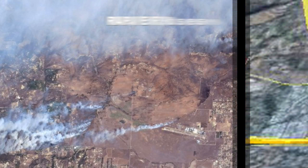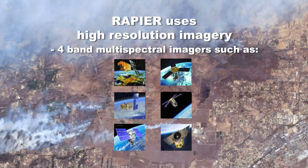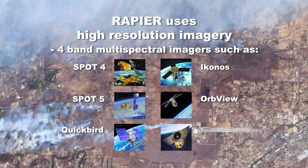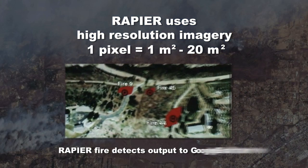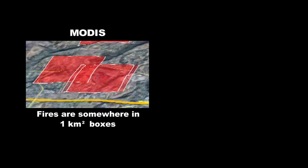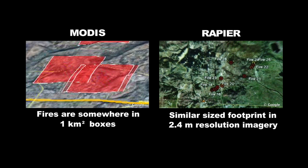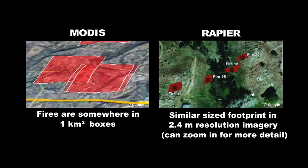The imagery that Rapier uses is high-resolution commercial satellite imagery. The types of imagery that Rapier can process are Spot 4 and 5, QuickBird and Ikonos, OrbView, and GeoEye. Each of these imagers has a different resolution — whether it's one meter, five meter, or 20 meters — but that is still better than what you'd get from MODIS, which is one kilometer. So whereas with MODIS you have a rough idea of where the fire is, with this high-resolution imagery you have a better understanding of the exact location of the fire, as well as its extent, and that provides better situational awareness.